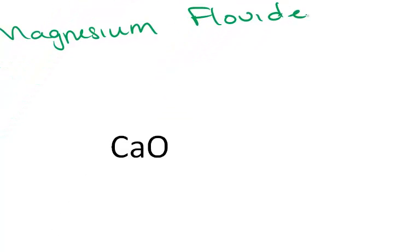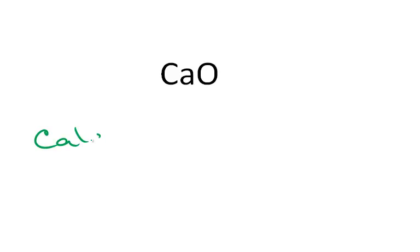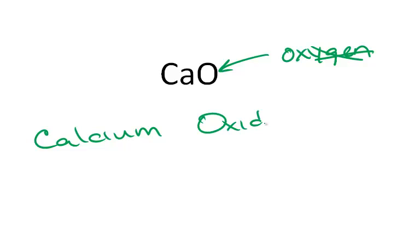In this example, calcium keeps its name. The anion is oxygen, which becomes oxide, giving us calcium oxide.